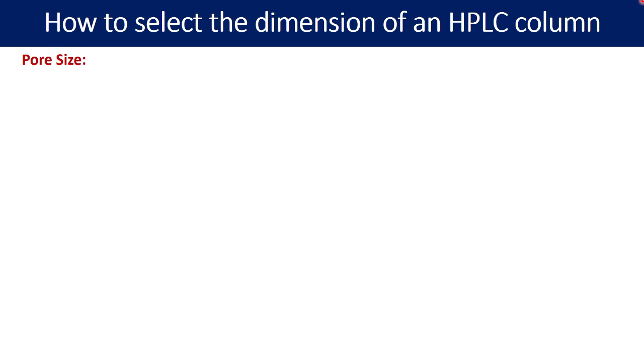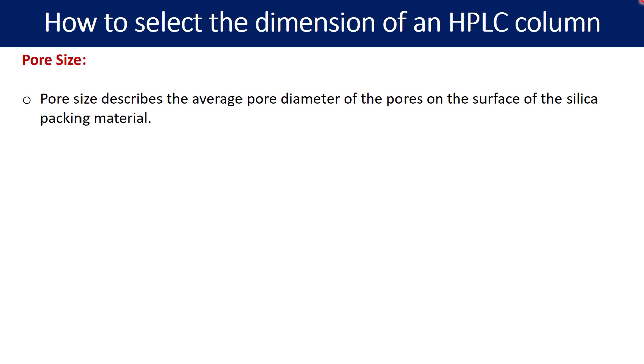Let us begin with the very first point, the pore size. Pore size describes the average pore diameter of the pores on the surface of the silica material. Your silica material is going to be a base material and your stationary phase will be maybe C8 or C18.